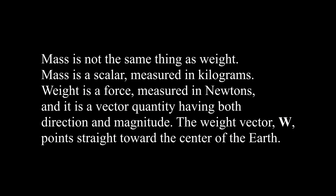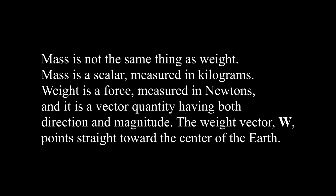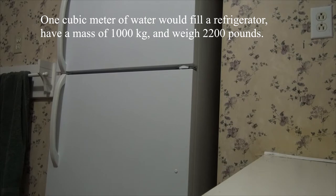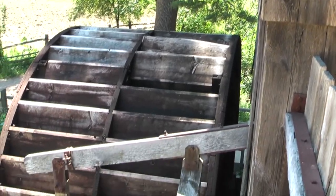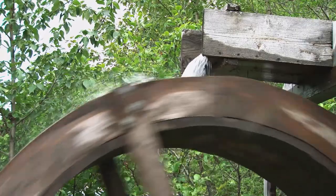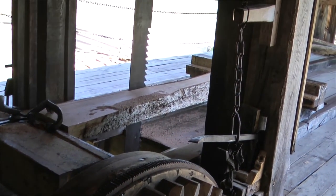Mass is not the same thing as weight. Mass is a scalar measured in kilograms. Weight is a force measured in newtons, and it is a vector quantity having both direction and magnitude. The weight vector W points straight toward the center of the Earth. The US is still using pounds as a unit of weight and slugs as a unit of mass. The weight of one kilogram is 2.2 pounds. A person having a mass of 100 kilograms will also have a weight of 220 pounds. One cubic meter of water would fill a refrigerator, have a mass of 1,000 kilograms, and weigh 2,200 pounds. An overshot water mill can hold 10 cubic meters of water, which weighs 22,000 pounds, and drives a saw blade or an entire factory.